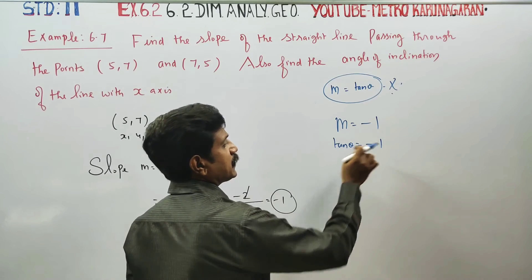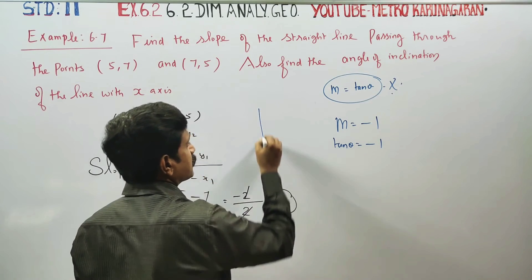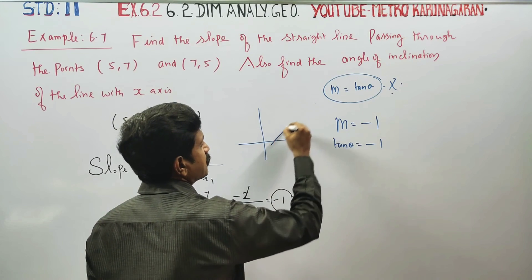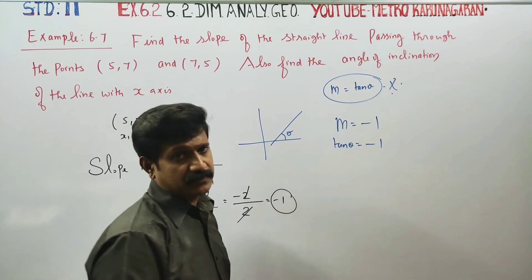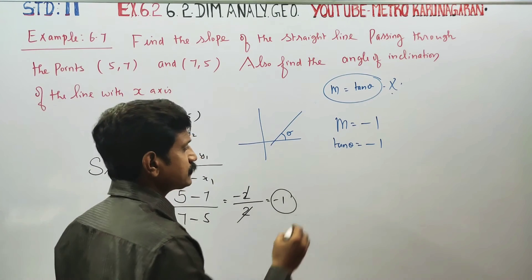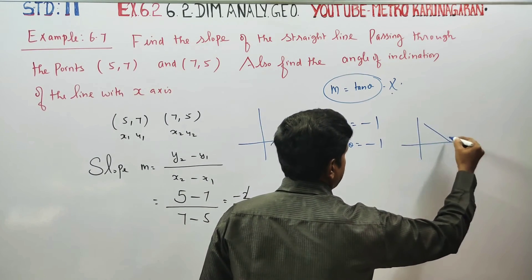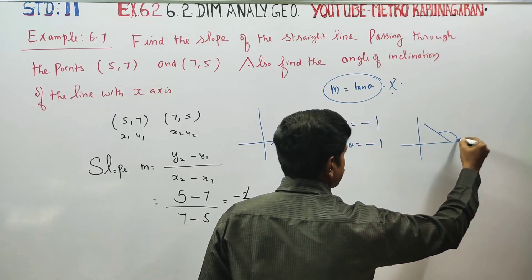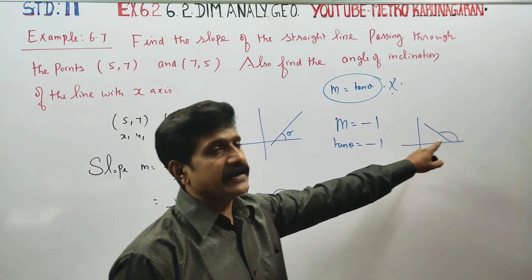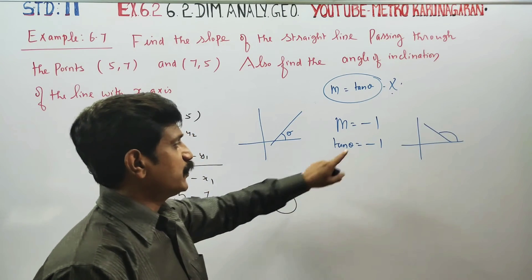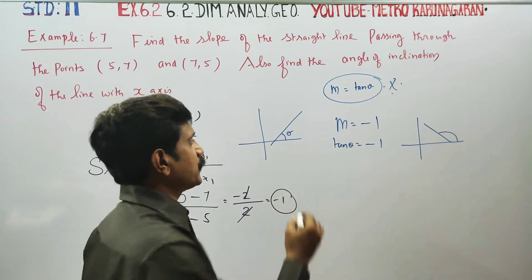Tan theta is equal to a negative value. When the angle is acute, tan is positive; when the angle is obtuse, tan is negative. So slope is negative means the angle is obtuse. Positive slope means an acute angle.